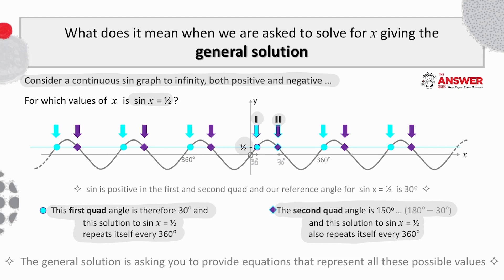As you can see by the graph, each group of solutions has its own rhythm. The first quad solution recurs every 360 degrees in both directions, and the same is true for the second quad angle, also recurring every 360 degrees in both directions.